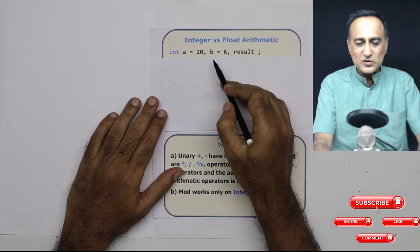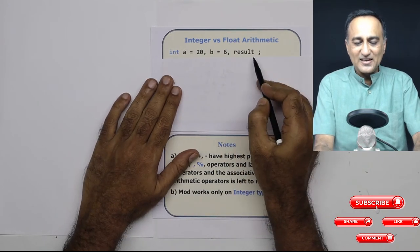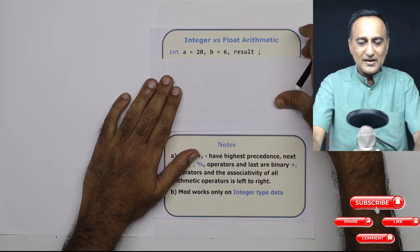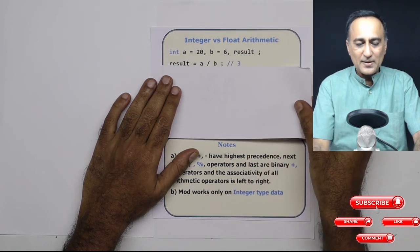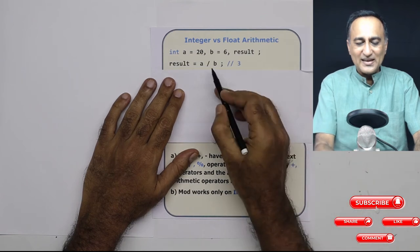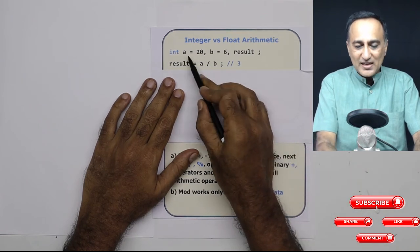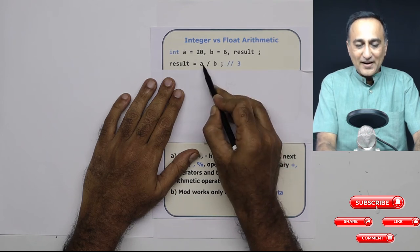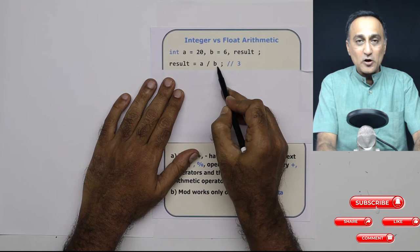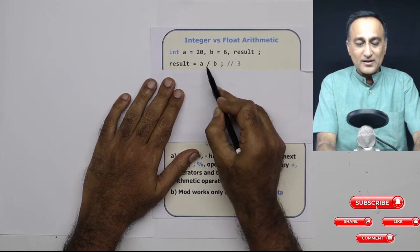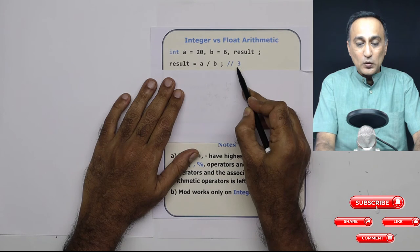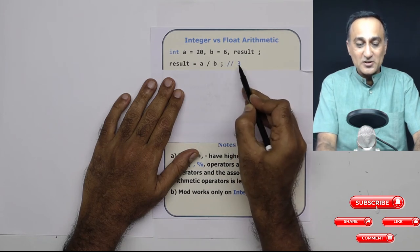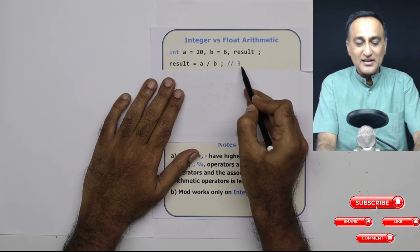Let's say I had int A as 20, B as 6 and result would hold the result of whatever I am doing with A and B. In the next step, I am simply saying result is A upon B. So if you see A is an integer and B is an integer. So if you divide the numerator by the denominator, both are integers. So the result of the division is going to be a whole number, it's not going to be three point something, it is just going to be the whole number three.